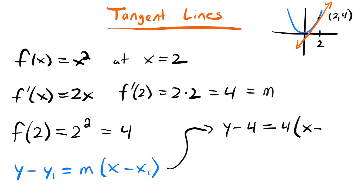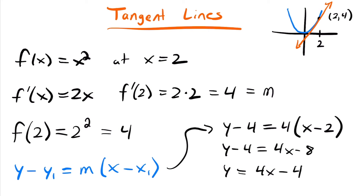We were interested at the point x equals 2. Simplifying: y minus 4 equals 4x minus 8. Adding 4 to both sides gives y equals 4x minus 4, since negative 8 plus 4 is negative 4. So that is the equation of the tangent line at the point (2, 4) on the function x squared. This is the process of using a derivative to find the slope at a point and then using that point and slope to create the equation of the tangent line.